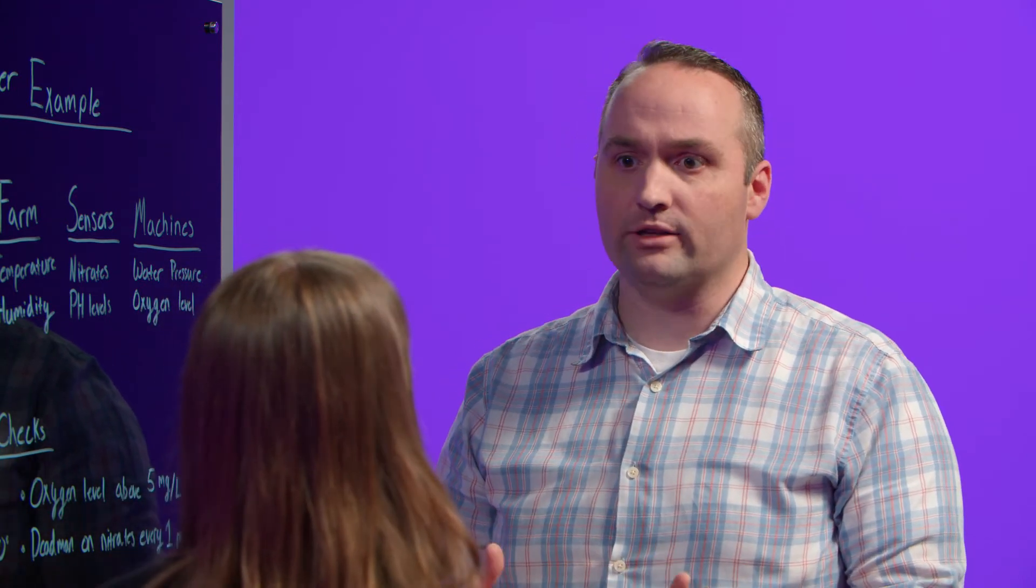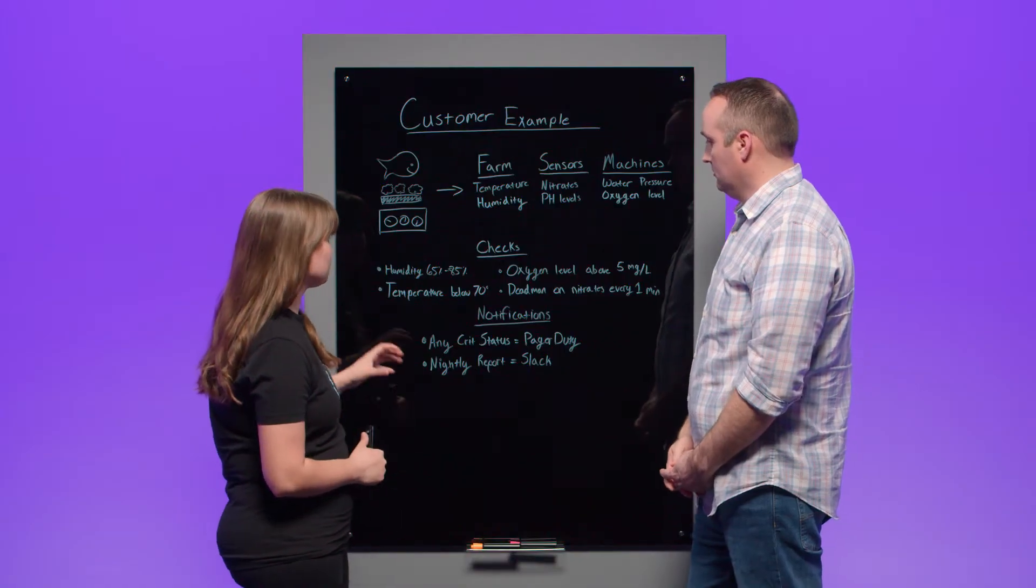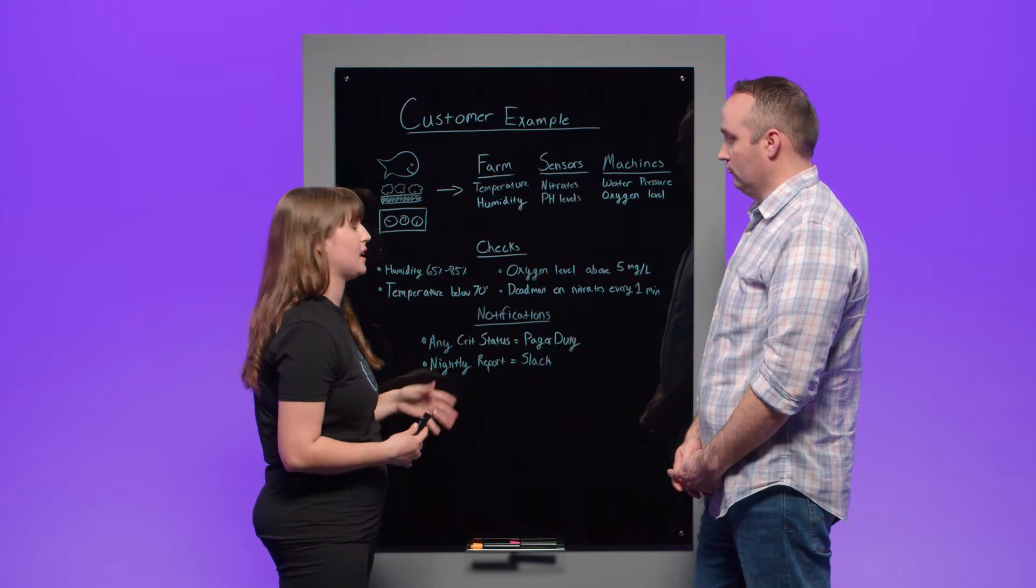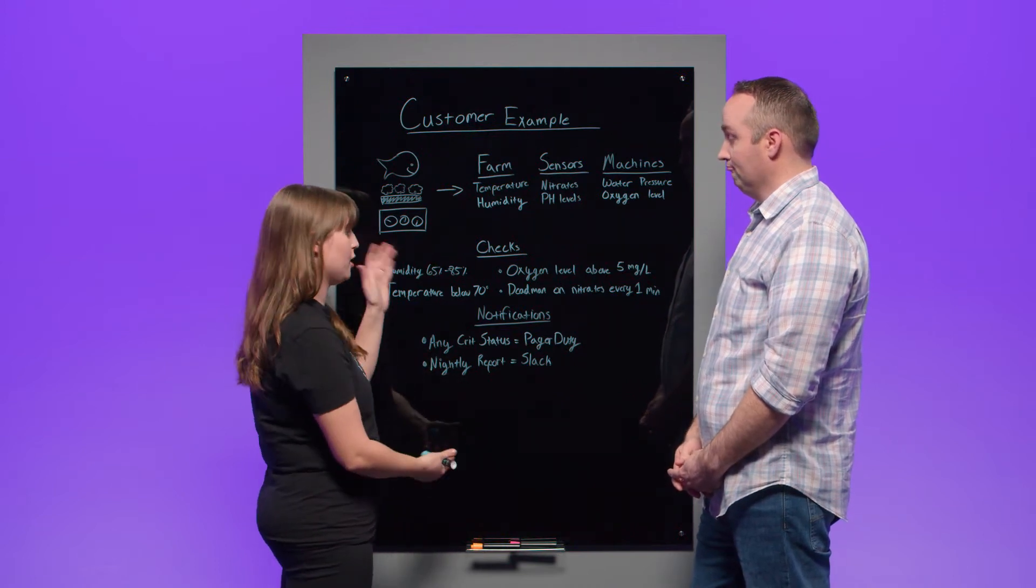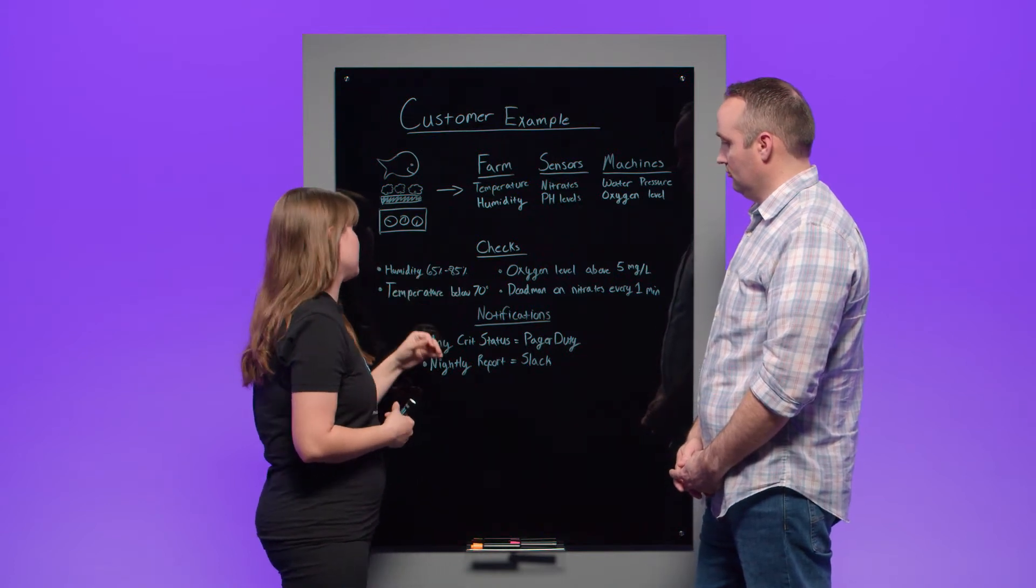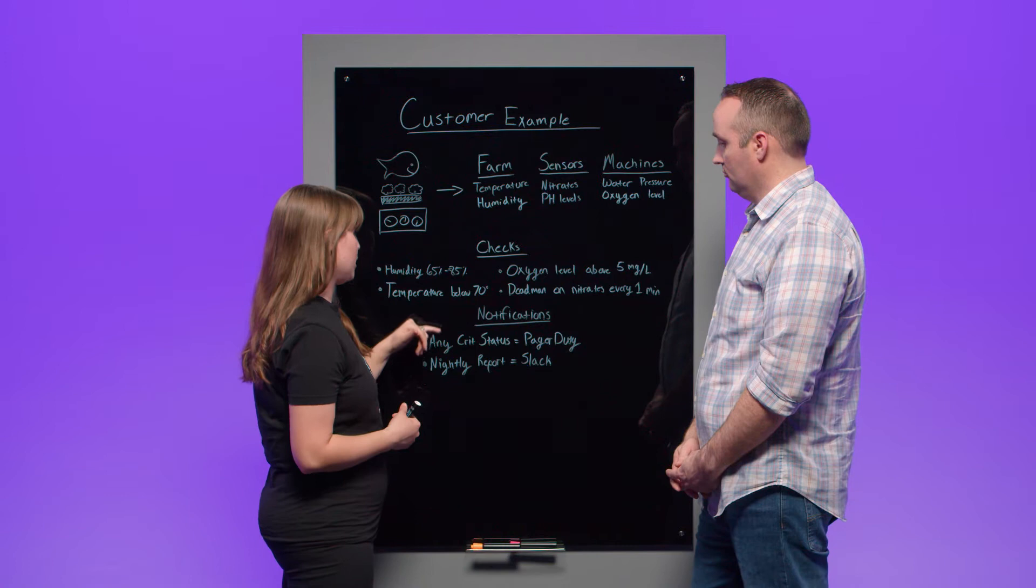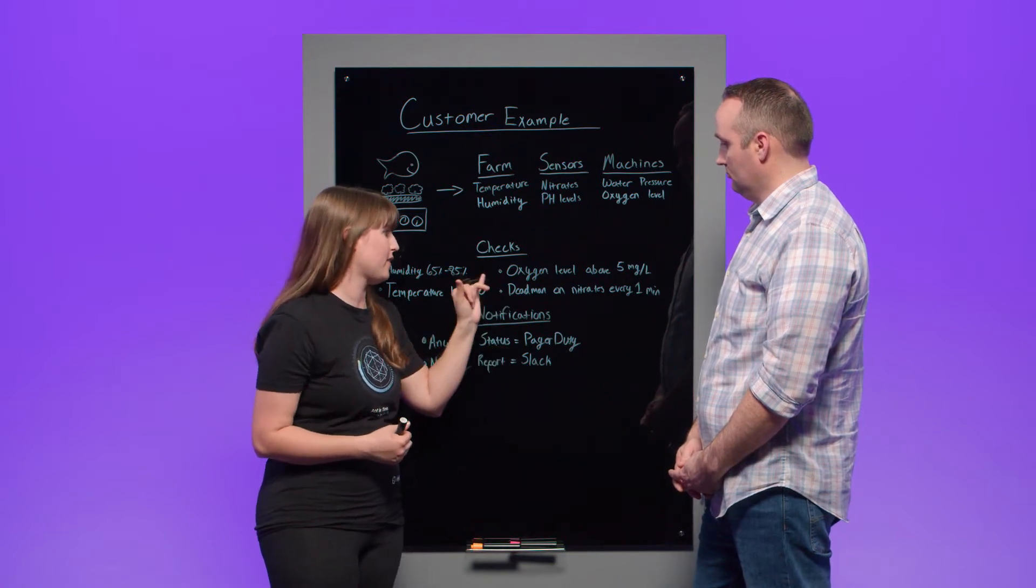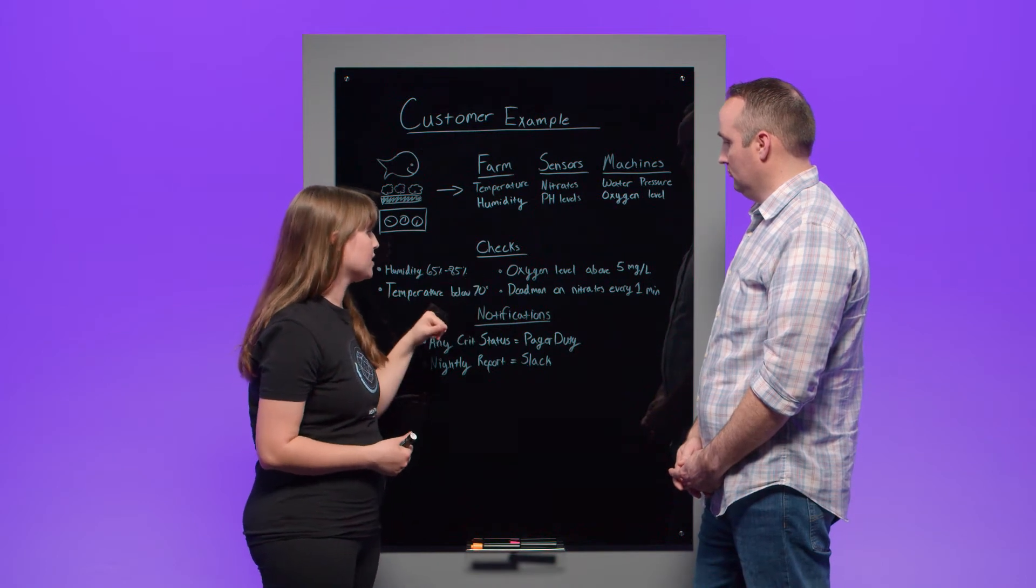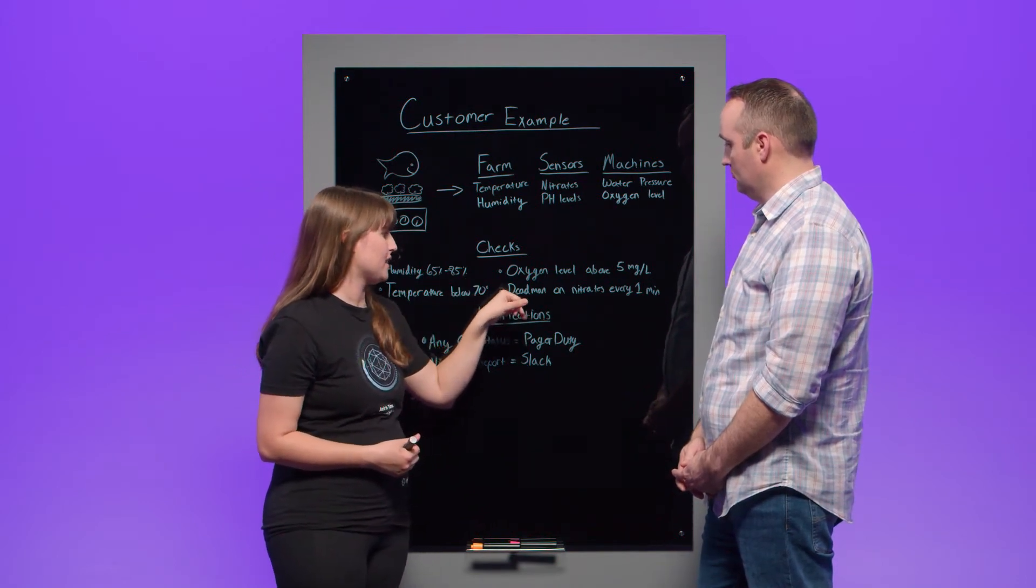So all this data that they harvest is then put up into InfluxDB because it's all time series data and it's specifically geared towards making sure that all of the systems in place are working as intended. So it seems like they're monitoring these specific metrics to make sure that everything's running correctly. So what kind of checks do they have to help in that monitoring?